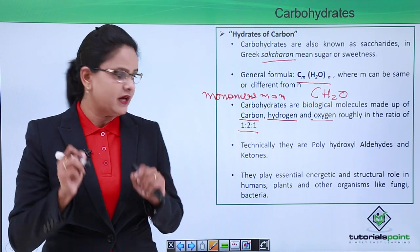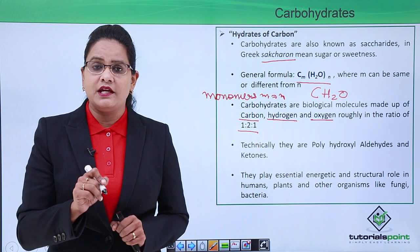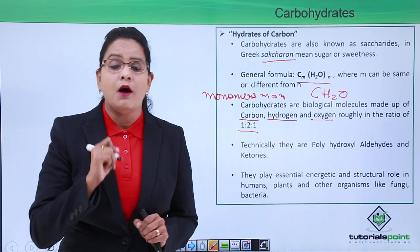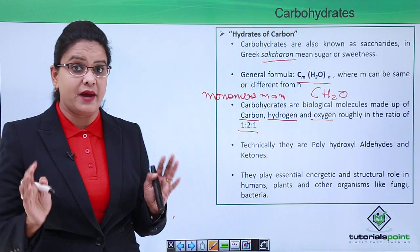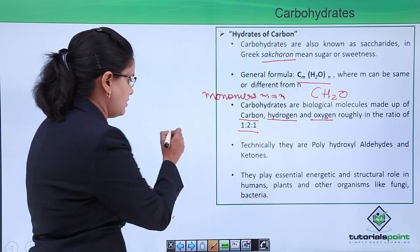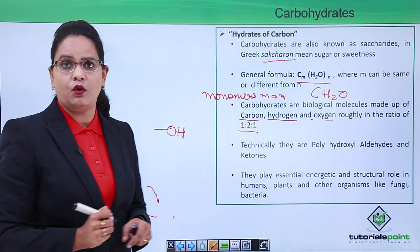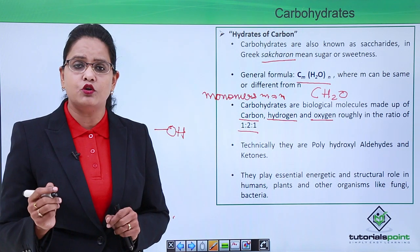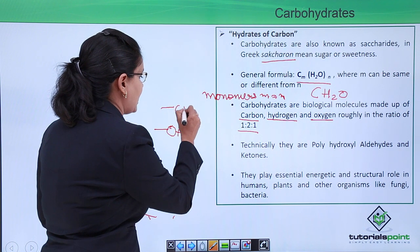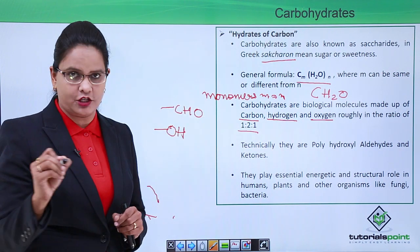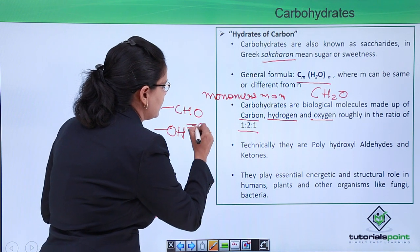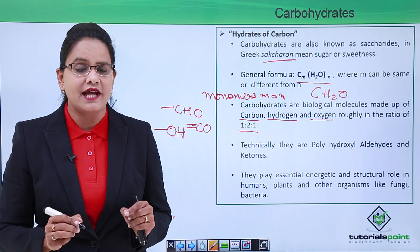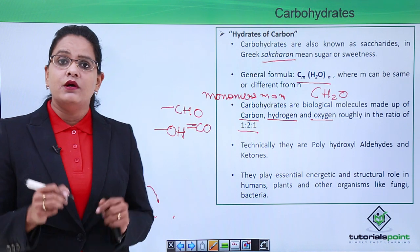Now technically speaking, they are poly hydroxy aldehydes or ketones. What does this mean? Let us break the word. Poly means many, hydroxyl means OH group. So they have many hydroxyl groups and aldehyde group, this is the aldehyde functional group, as well as a ketone group. So they are called poly hydroxy aldehydes or ketones.